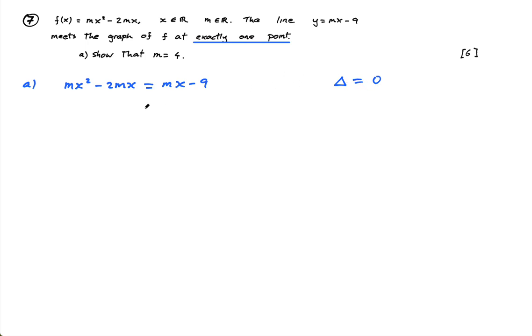Okay, now I need to get the discriminant. So I need to rearrange this. So I have mx squared minus 2mx, well, it's minus 2mx minus mx, so it's minus 3mx, plus 9 equals 0. So a is m, b is negative 3m, and c is 9.